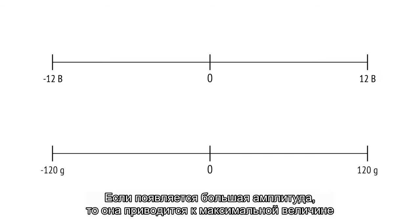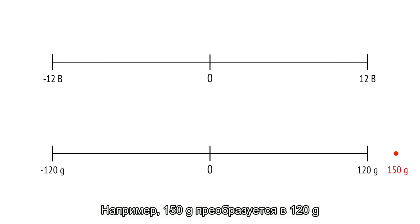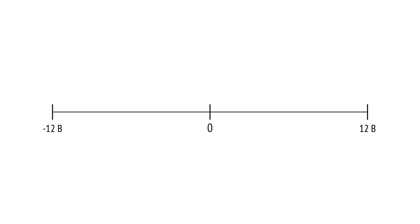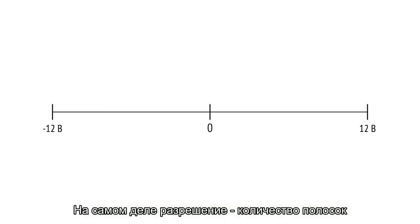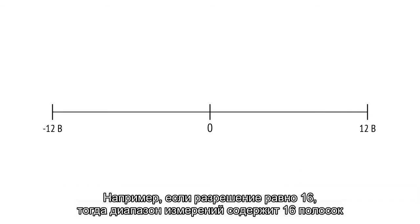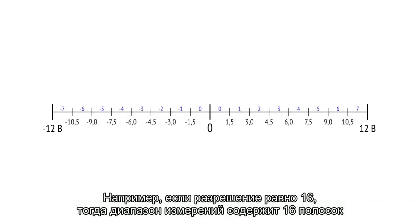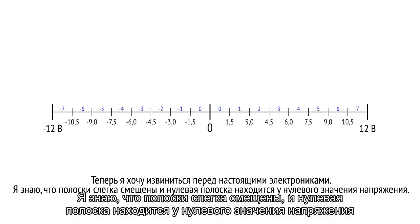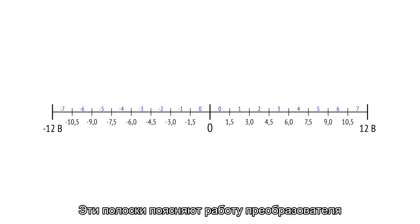If a higher amplitude comes in, it is converted to the maximum value — for example, 150 G is converted to 120 G. Now we introduce the key factor of each converter: the resolution. The resolution is a number that defines something like stripes inside the measurement range — it is the number of stripes. For example, when the resolution is 16, the measurement range contains 16 stripes.